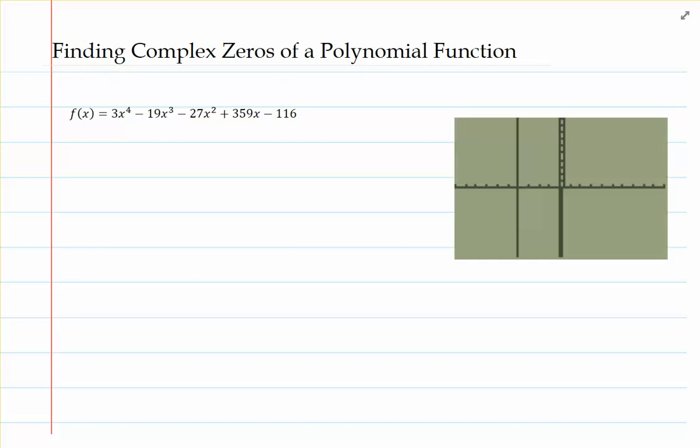We are allowing for complex zeros, meaning that there could be zeros here that have i's with them. The fundamental theorem of algebra tells us that if we include those zeros that have i's with them, then the polynomial function is going to have exactly as many zeros as its degree. For this polynomial function in question, that's going to be exactly equal to 4.